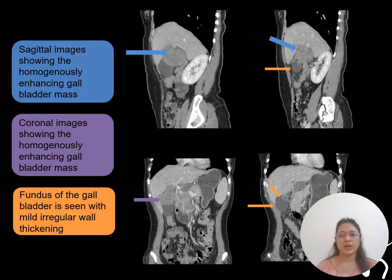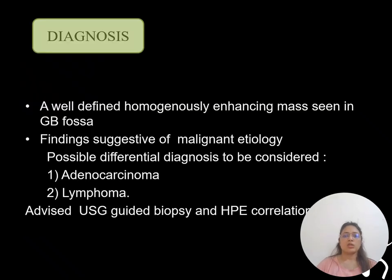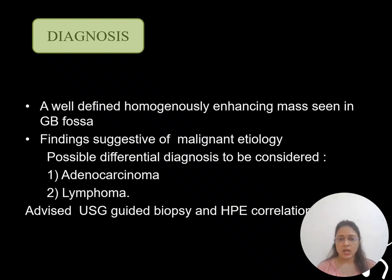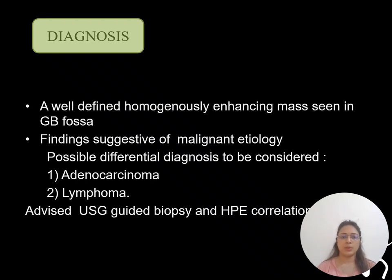The fundus of the gallbladder shows diffusely thickened and irregular walls; however, the mass shows homogenous enhancement. We came to a diagnosis of a well-defined homogeneously enhancing mass in the gallbladder fossa, suggestive of malignant etiology. The possible differential diagnoses to be considered were adenocarcinoma and lymphoma. Therefore, USG-guided biopsy and histopathology correlation were advised.